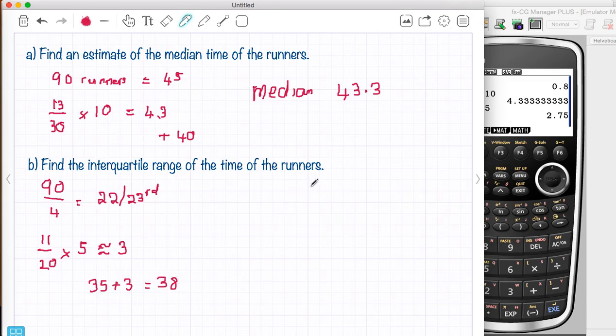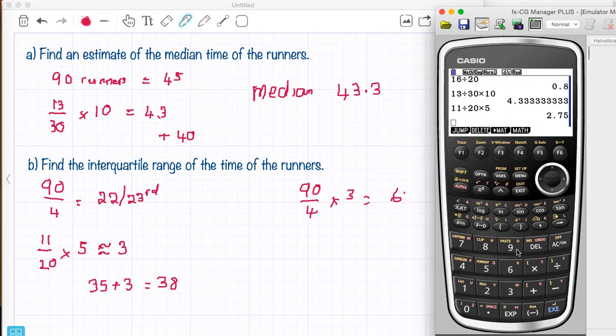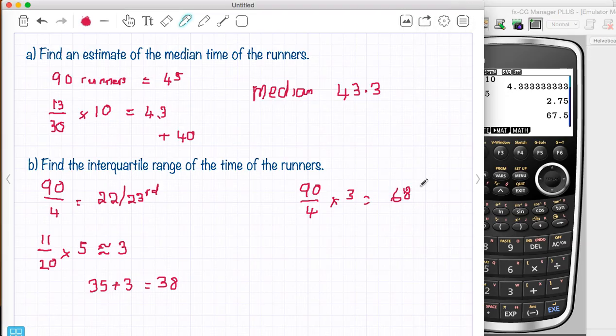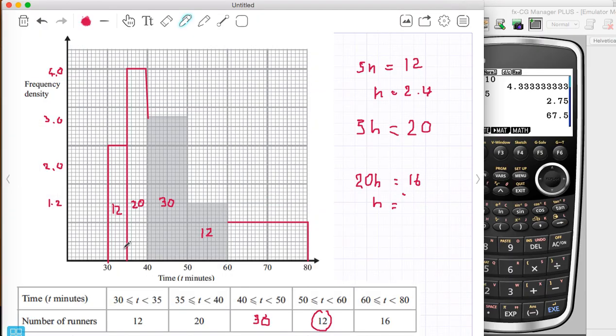Now I'm going to do the upper quartile which is 90 divided by 4 times 3 which is going to give me the 60. Just double check this. 22.5 times 3. 60. I'm going to say roughly the 68th person. Okay, so let's have a look at the 68th person.